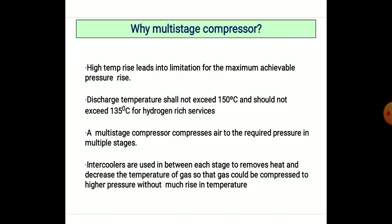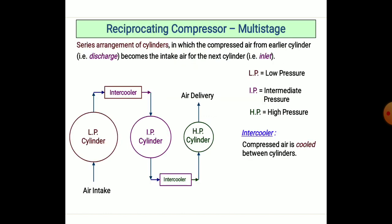A multi-staging compressor compresses air to the required pressure in multiple stages, and intercooled air is used between each stage to remove heat and decrease the temperature of the gas, so that the gas can be compressed to high pressure without much rise in temperature.